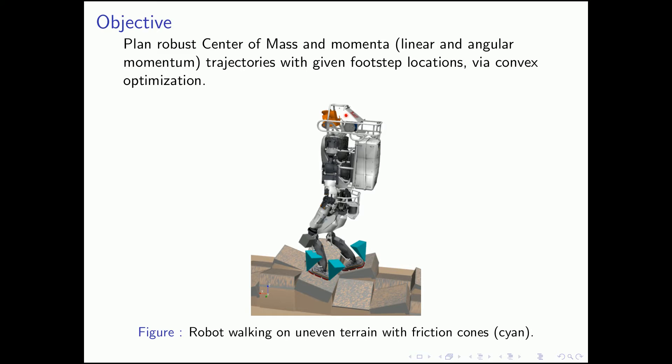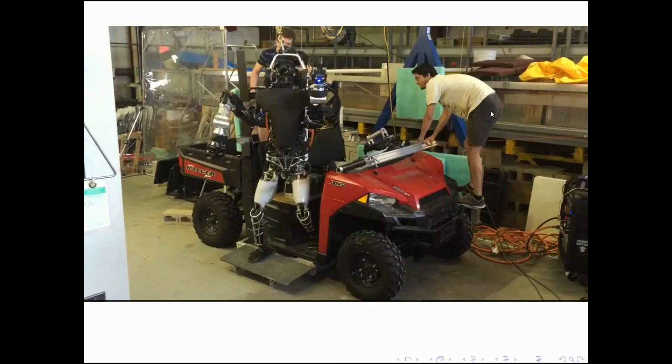We will first talk about how to measure the robustness of the motion, and second, we will show how to formulate the motion planning problem as a convex optimization problem.